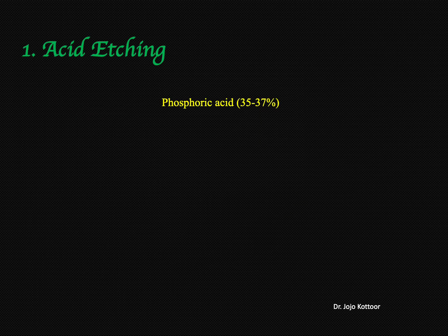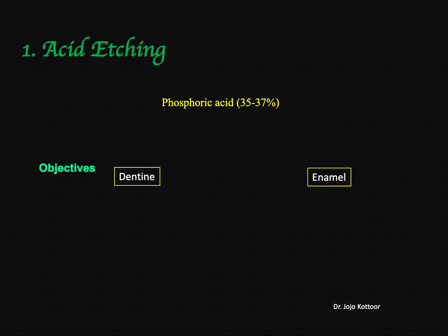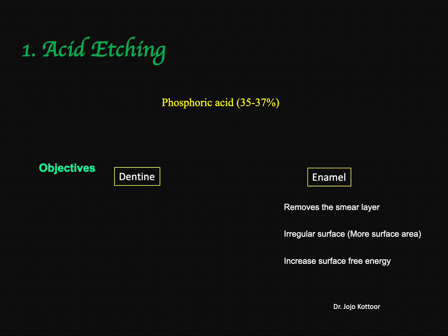Let's start with the first step, that is acid etching. It is done with phosphoric acid at a concentration between 35 to 37%. The etchant's objective is different on enamel and dentine. Towards enamel, the etchant obviously removes the smear layer which is produced because of cavity preparation. It makes the surface irregular by etching the enamel rods, and obviously it increases the surface free energy — so when the surface free energy is increased, adhesion is improved.